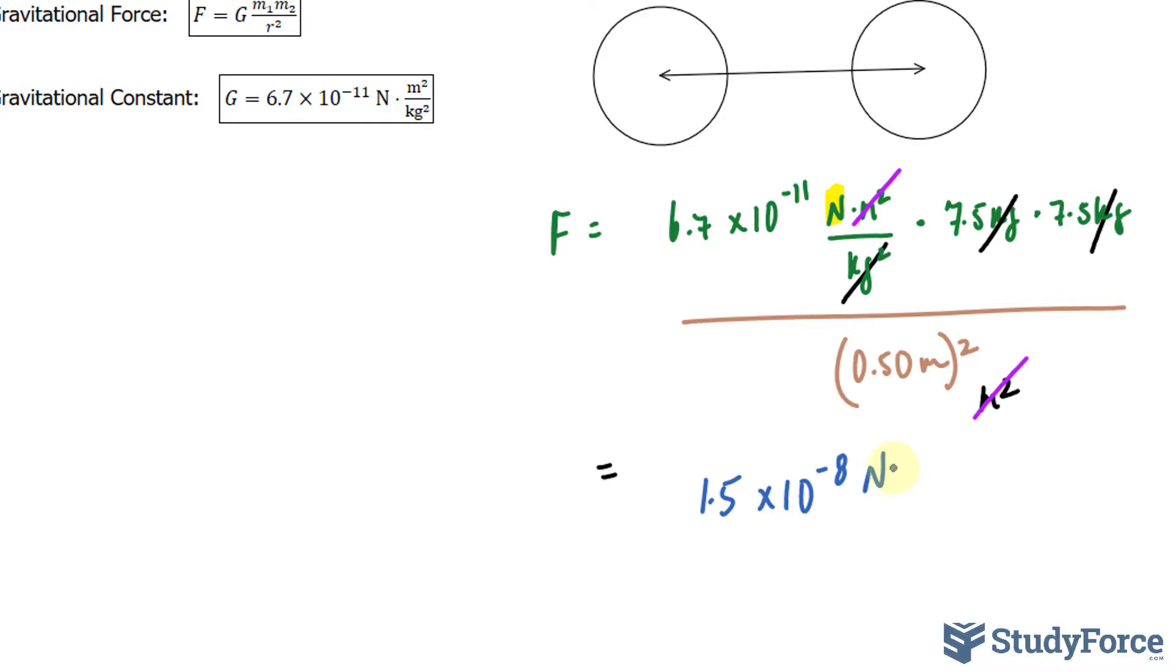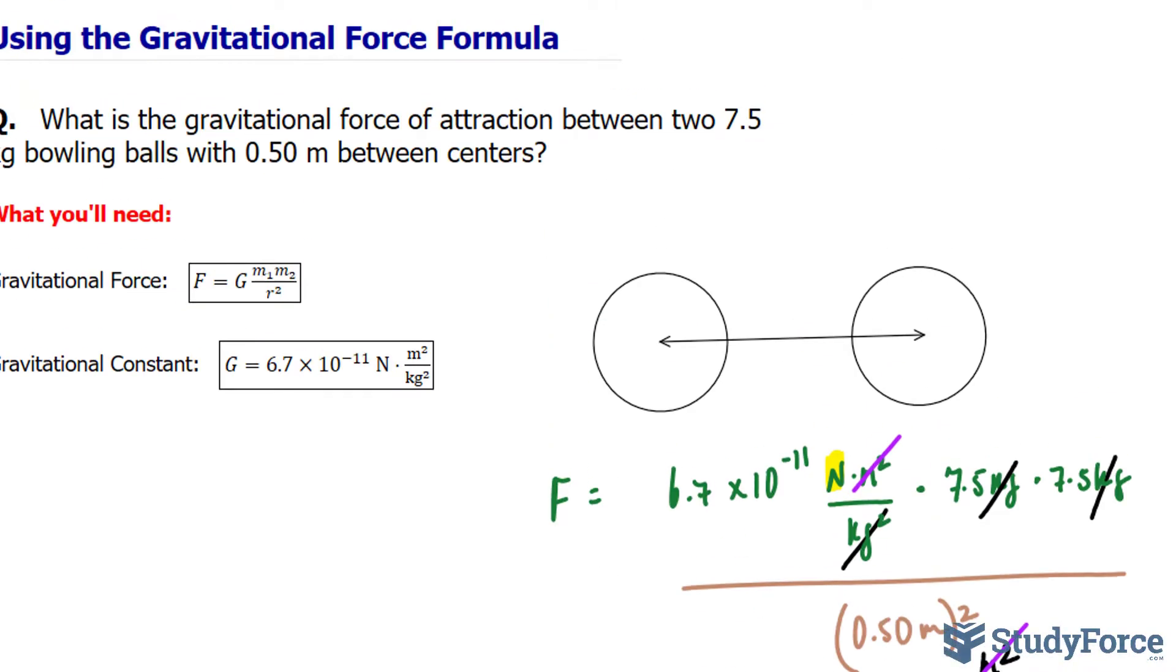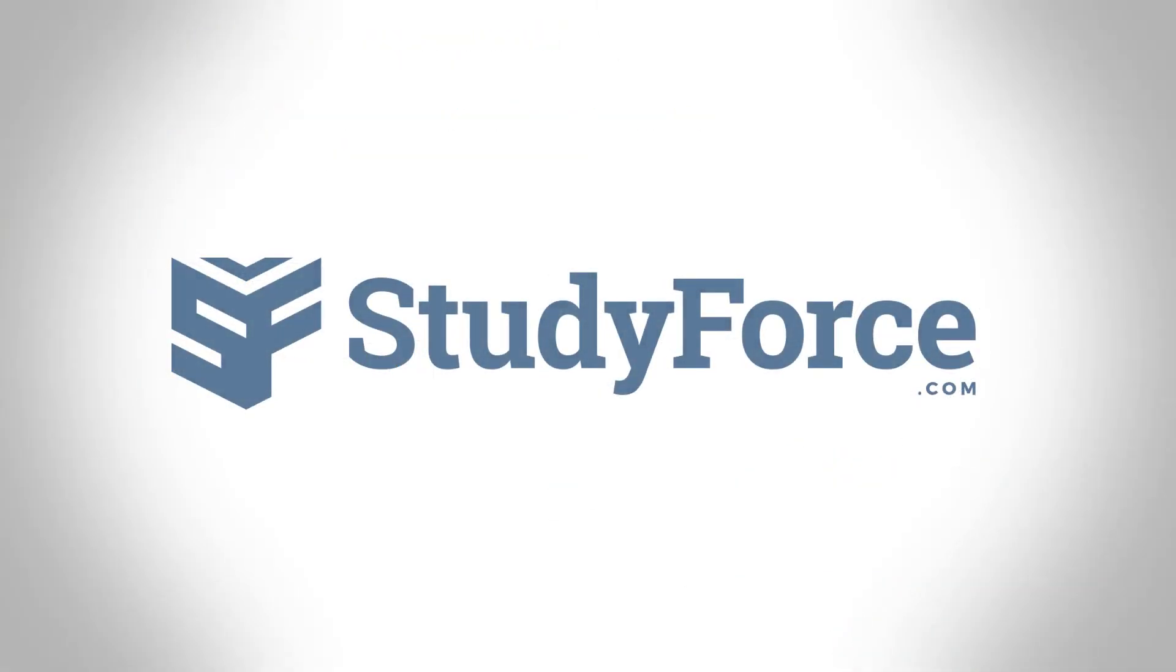So that's the force that exists as a result of having mass between these two objects. And there you have it. Now you know how to use the gravitational force formula.